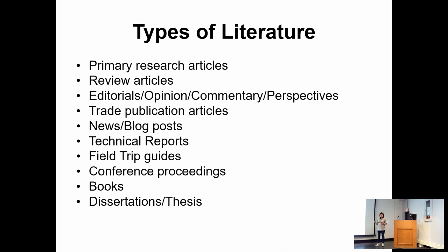When we decide whether to cite a paper or publication, we need to think about a few factors: is this source credible, or can citing this work enhance my work? For me, I mostly only cite primary and review articles, and probably sometimes textbooks or perspectives if I need to comment on the future of the field. I rarely cite those informal publications because there is one very important process involved in primary and secondary literature that is missing in those informal publications.